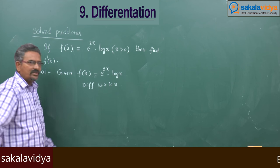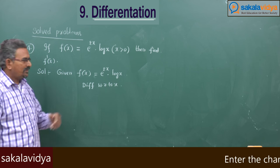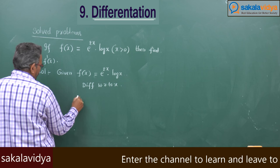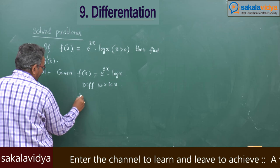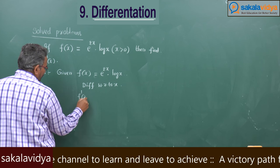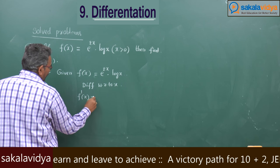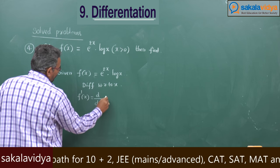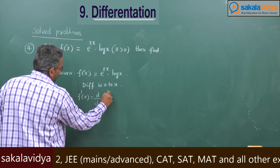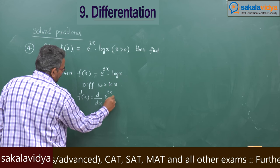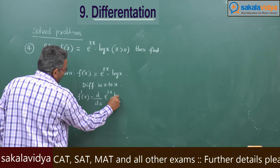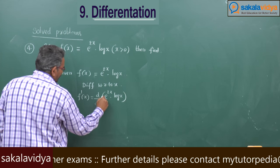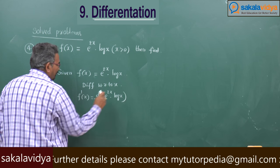Differentiating both sides with respect to x, f of x becomes f dash x, equal to d by dx of e power 2x into log x. This is the UV method — the product rule.